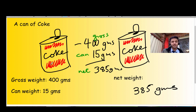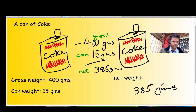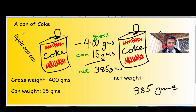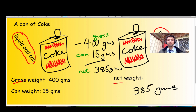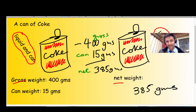Gross is the liquid and the can together — that's your gross. Whereas net is just the liquid itself. Or it might not be liquid; it might be the chocolates inside the box. But whatever it is, it is the contents, not the box itself.